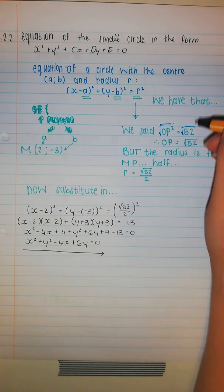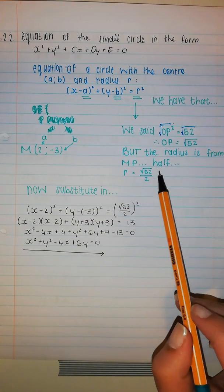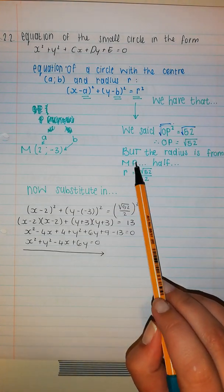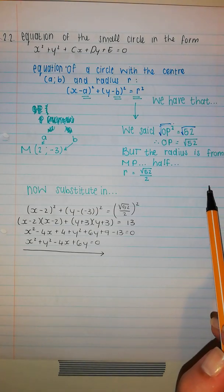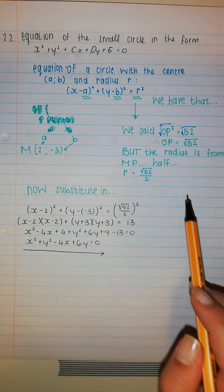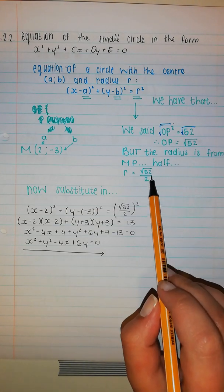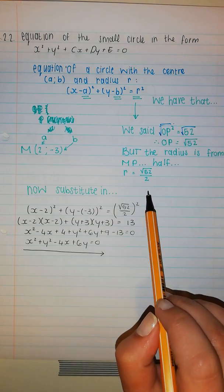What we do on one side, we do on the other side. With that being said, the radius is half of that, so it's going to be the square root of 52 divided by 2. Now we just substitute everything in.